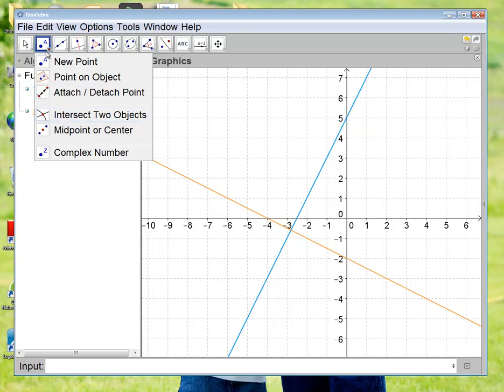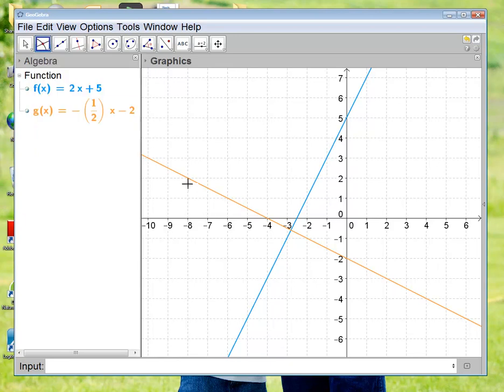Okay, so I'm in the second window. Remember the bottom right corner is a little upside down triangle that if you click on that you get more options. So I'm going to click intersect two objects. I'm going to click on my g graph, my orange line, and then I'm going to click on my blue line, my f graph, and voila, it's intersected the two objects.